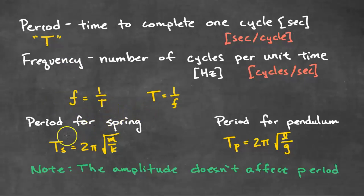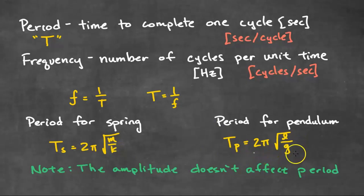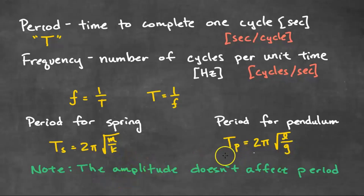The period for a spring is equal to 2π times the square root of the mass divided by the spring constant. The period for a pendulum is 2π times the square root of the length of the pendulum divided by g, the gravitational field strength. Note that the amplitude does not affect the period, so you do not see the amplitude in the period equation.